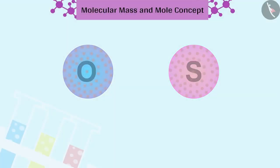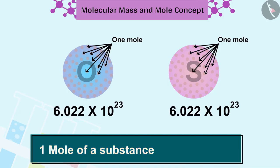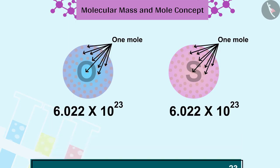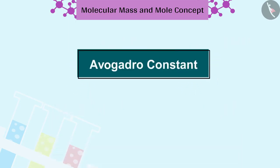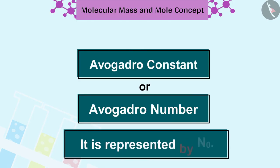The number of particles in a mole of a substance is fixed, whose value is 6.022 into 10 raised to 23. It is called Avogadro constant or Avogadro number. It is represented by NO.